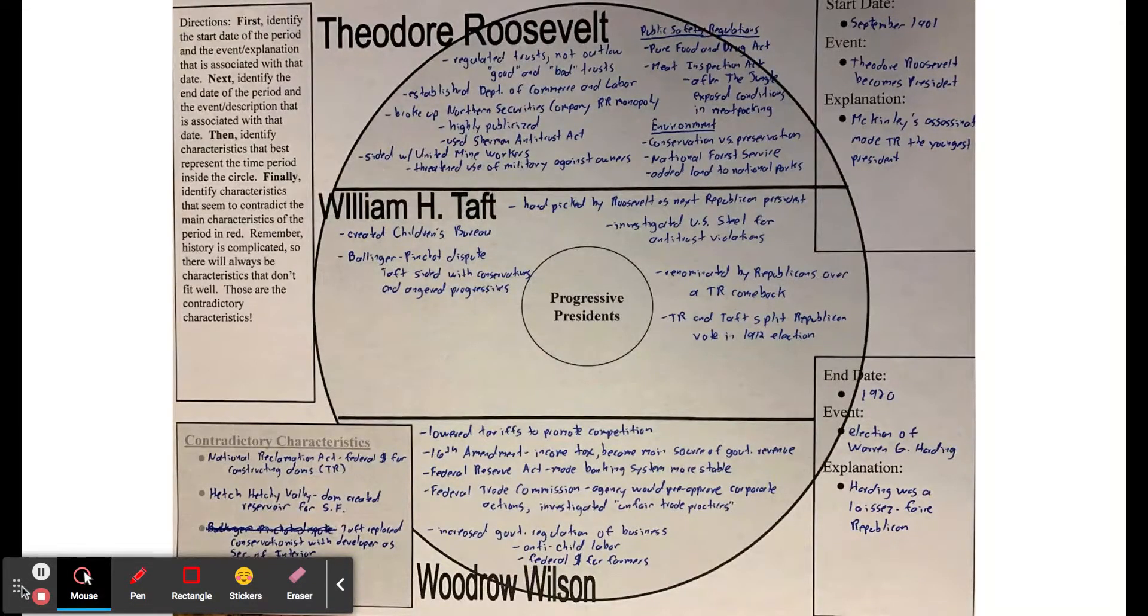Okay, so we're going to start talking about these progressive presidents. Theodore Roosevelt and Taft are both Republicans, and Woodrow Wilson was a Democrat. One of the things that tells us is that progressives spanned across political parties. They're both Republicans and Democrats that were progressives.